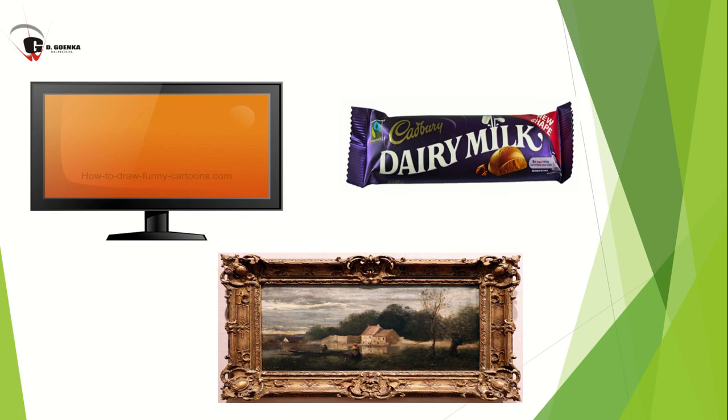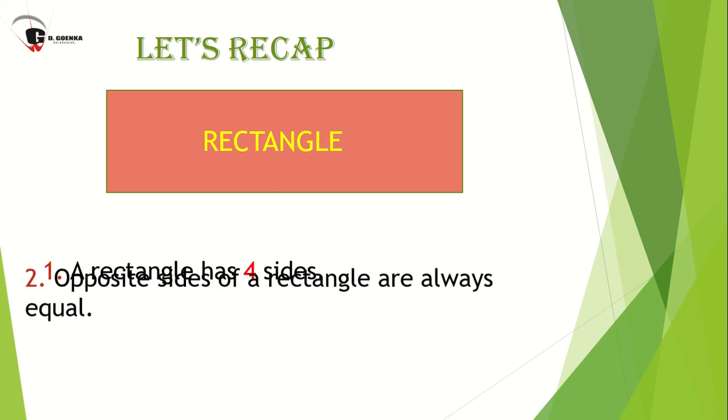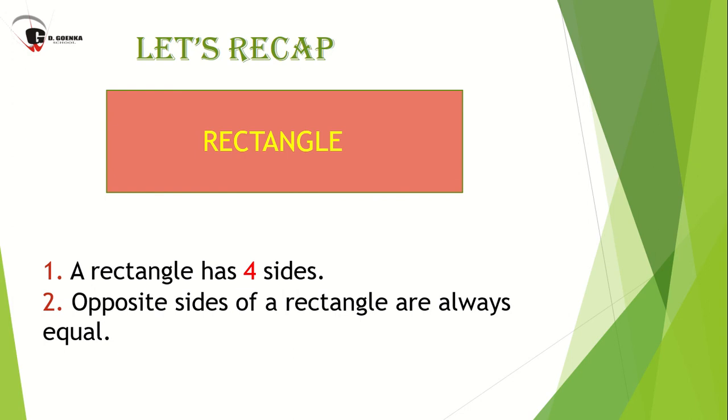Now let's recap. So number one, a rectangle has four sides. Number two, opposite sides of a rectangle are always equal. Number three, rectangle has four corners.